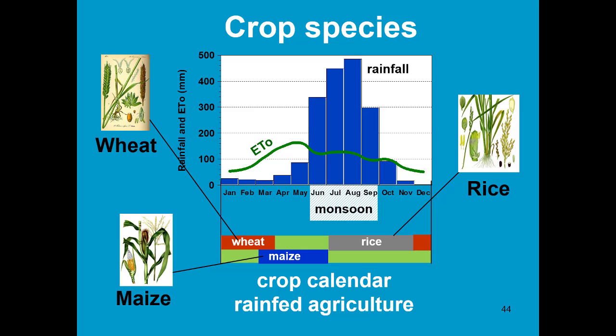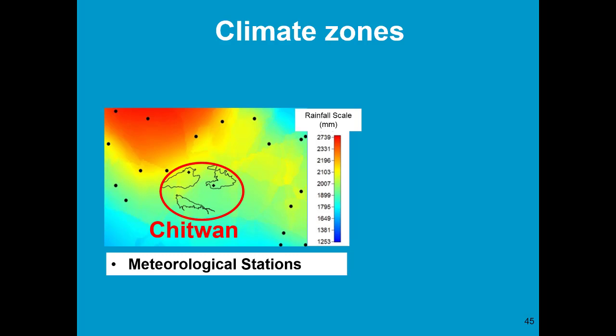Let's run an example in which we have three crops — rice, maize, and wheat — which are grown in that area. So we need to consider three crop types. In that area, we also have climatic stations, and in the region under consideration, there are two stations.